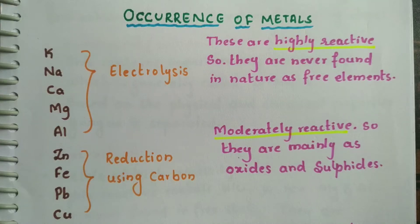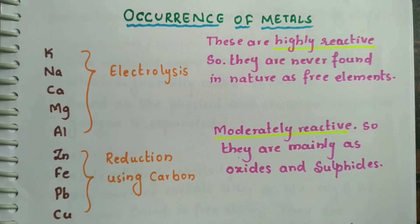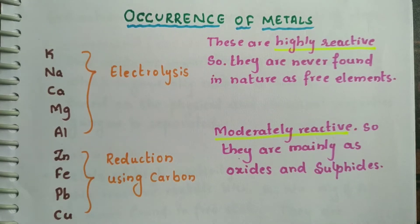Hello students, welcome to Study Hive. This is the third part of your third lesson — metals and non-metals. Today we are going to learn about the metallurgical processes, so let us see how metals occur in nature.